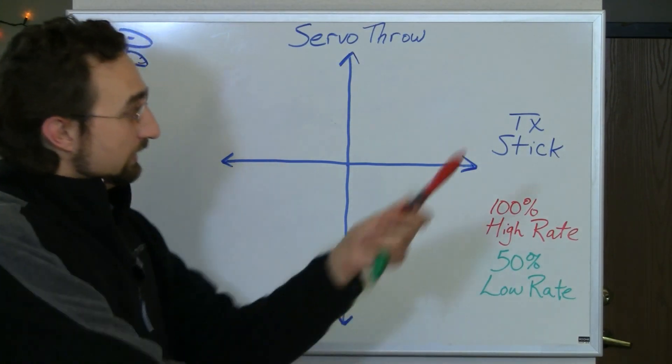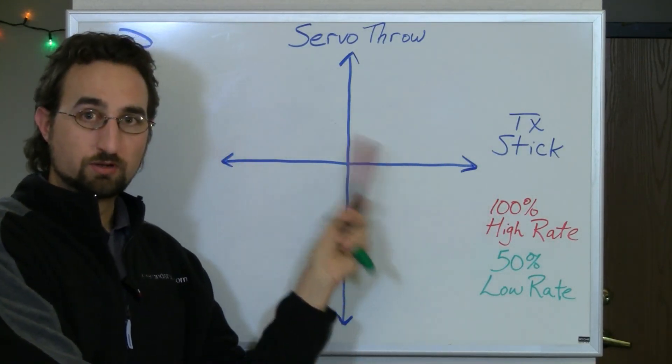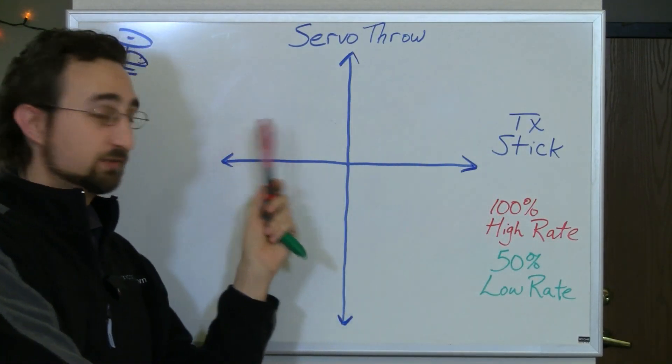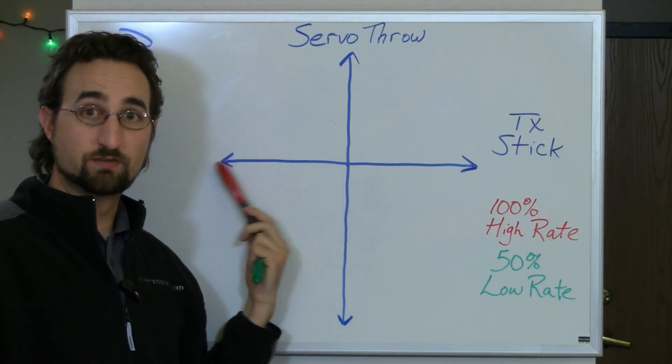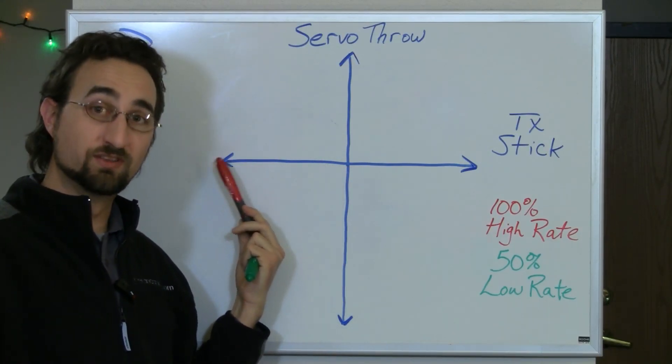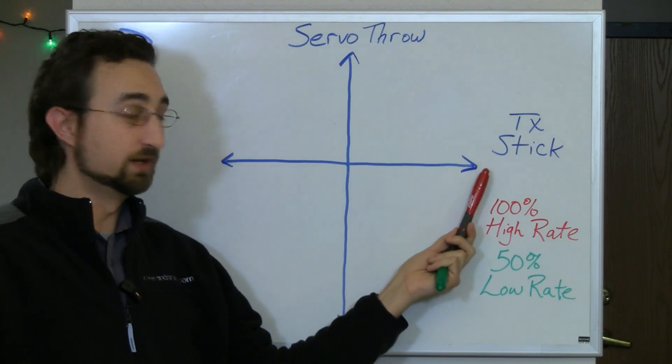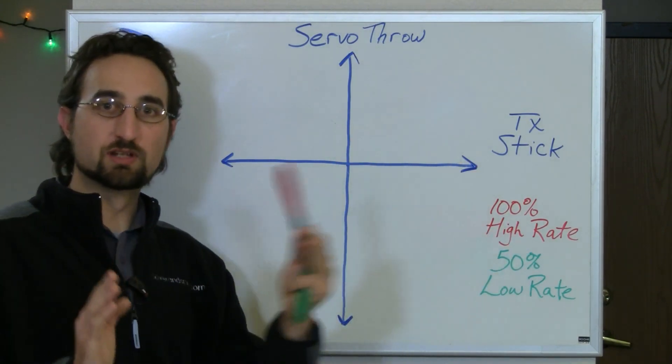So that being said, your transmitter stick movement is graphed along this line. So if I've got my transmitter stick centered, I'm at this point. If I've got my transmitter stick all the way to the left, it's here, and all the way to the right, it's here. Just the extreme opposite ends of your transmitter.